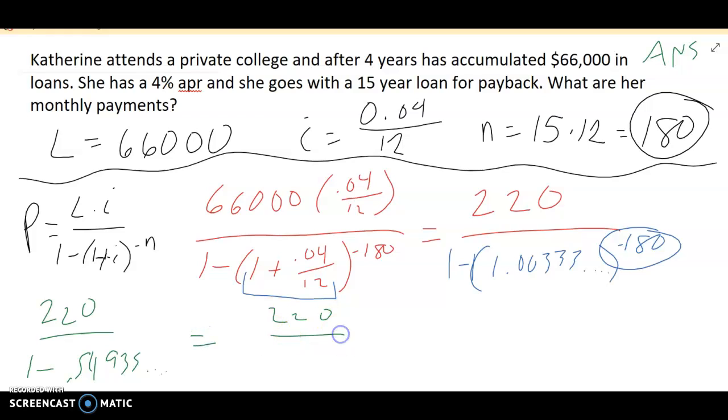So now when I take 1 minus that answer, I get 220 over 0.4506, and that's going to continue on forever. Then I take 220 divided by that, and I get 488.19. So $488.19.